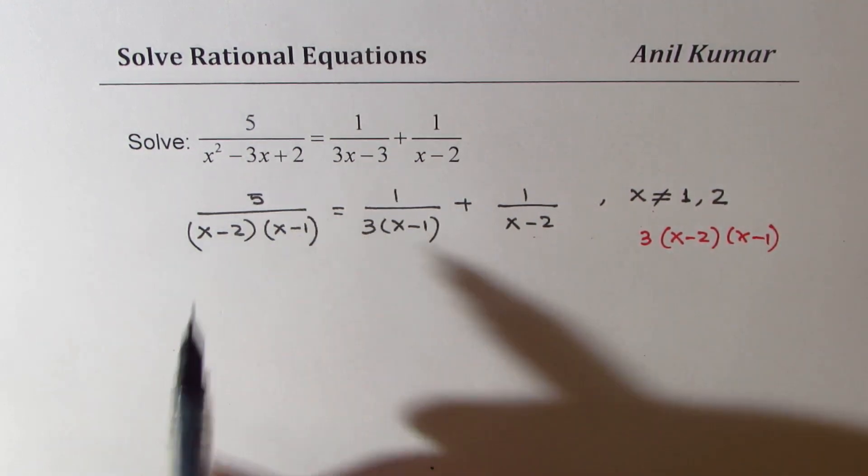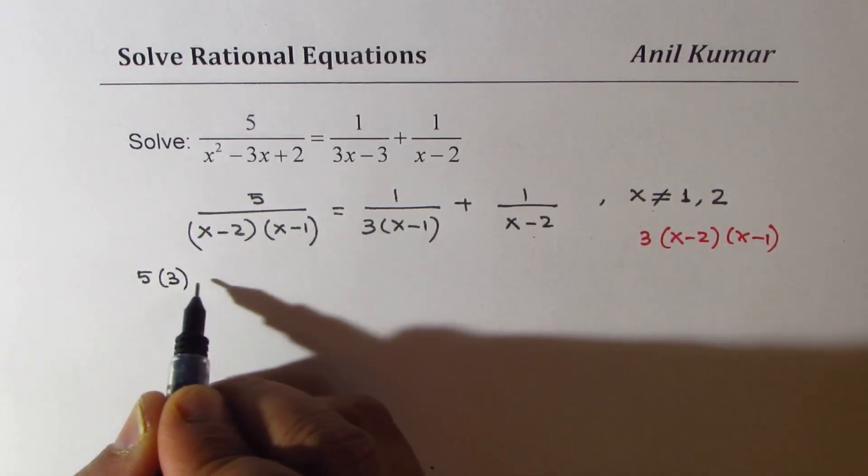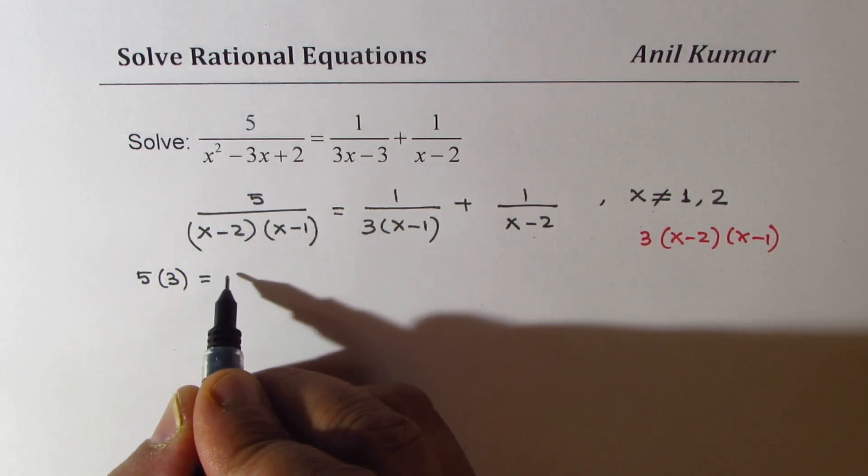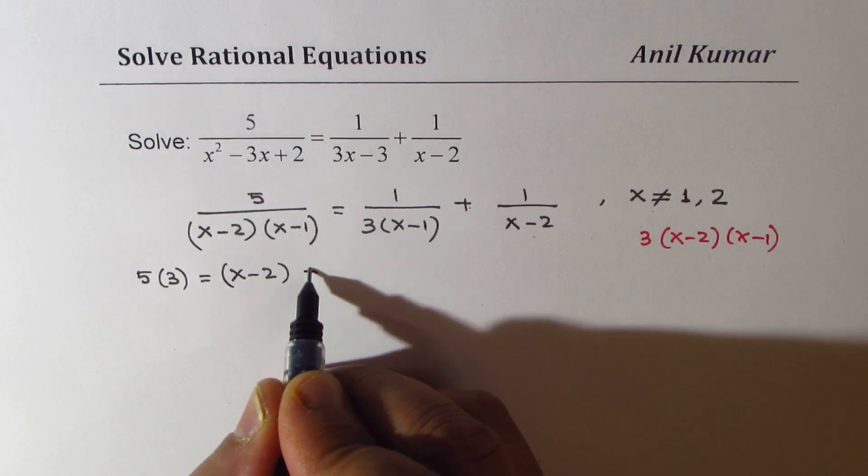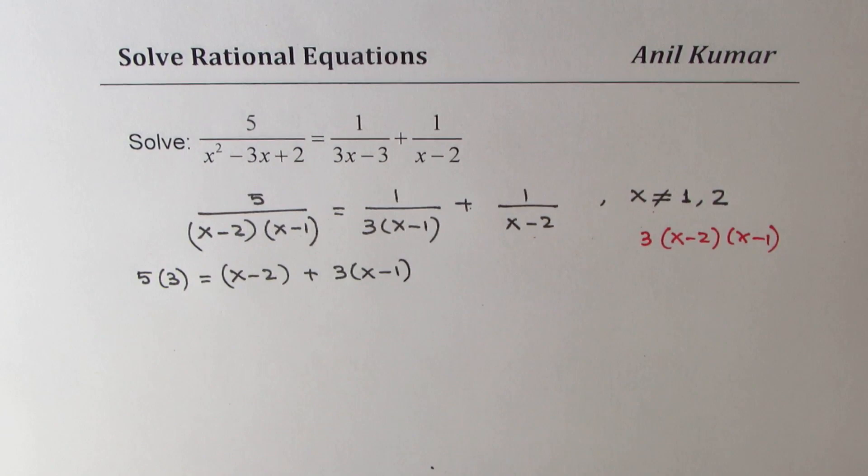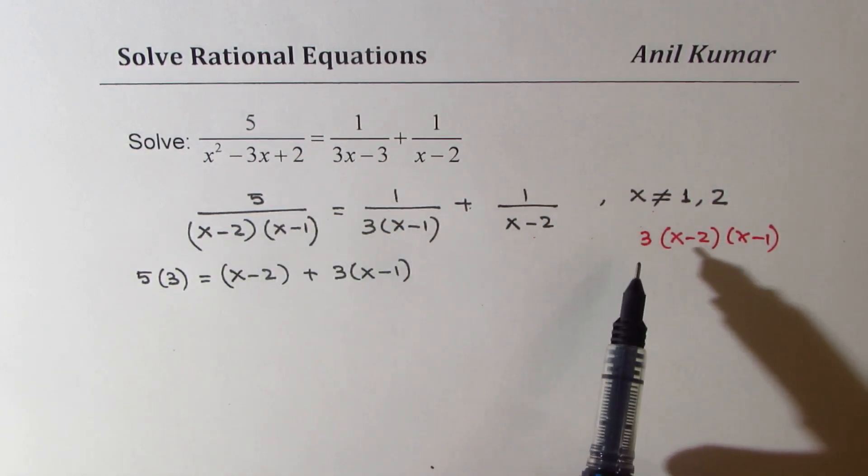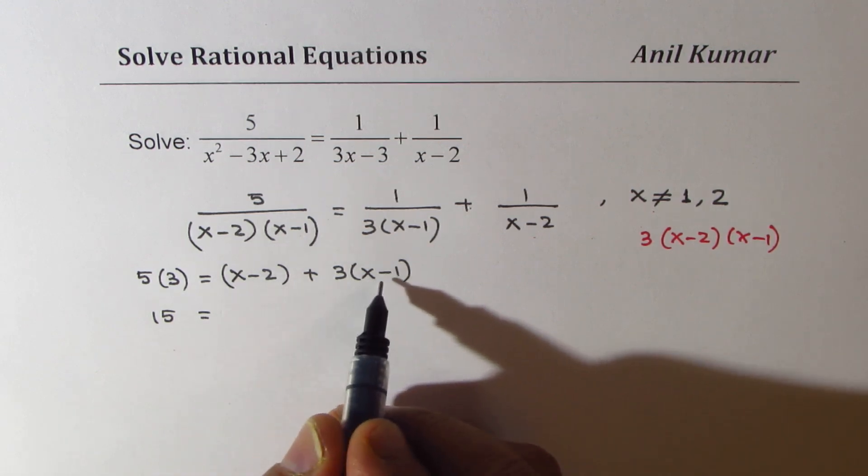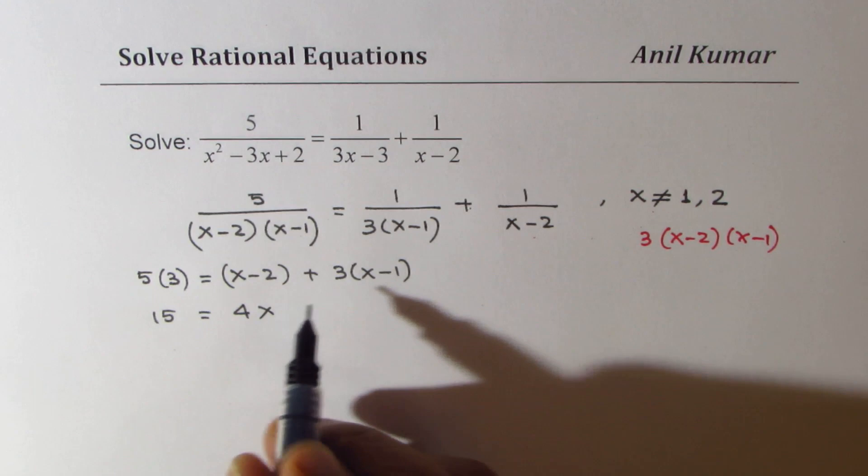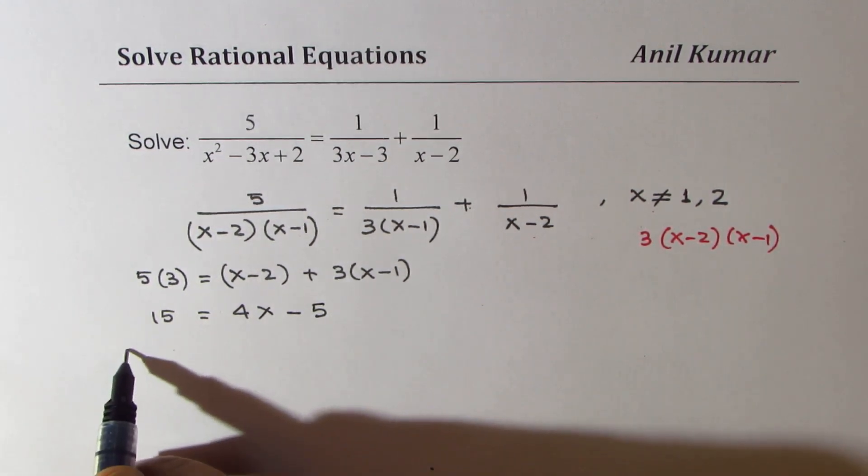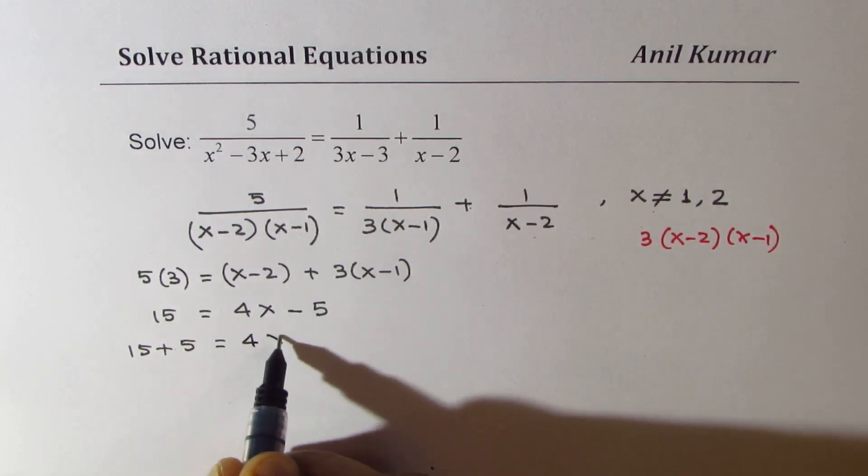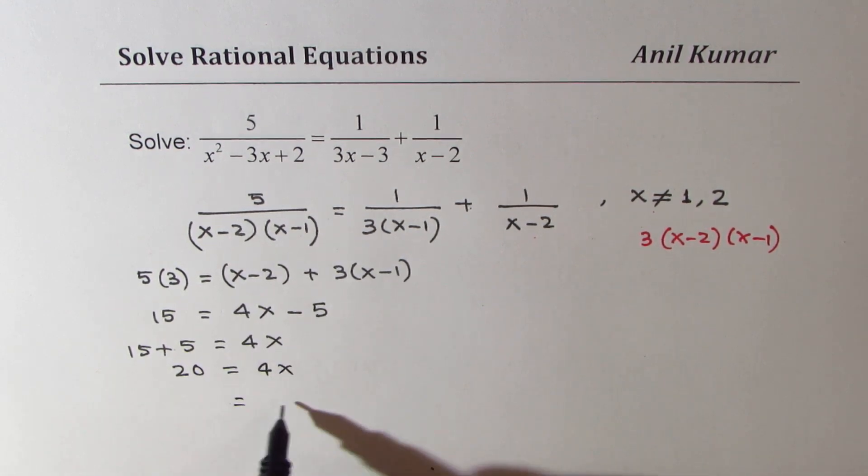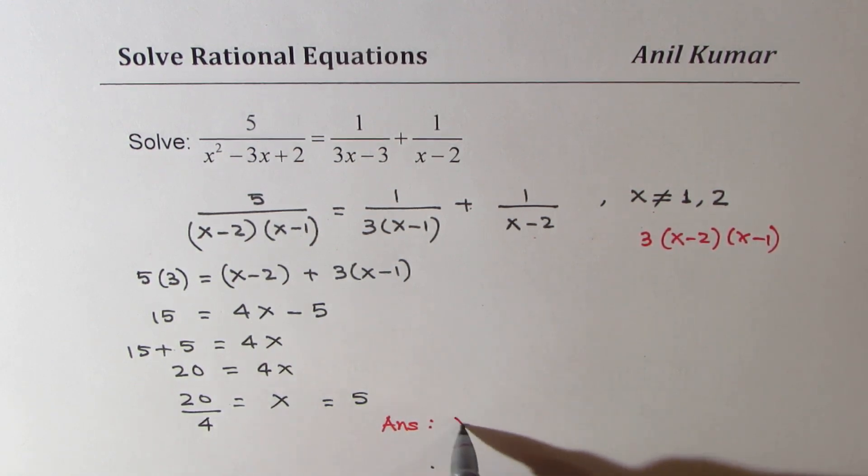So if you do that, what do you get? Here you get 3 times 5 equals to 1 time the factor which is missing is x minus 2, so we get x minus 2, and then here we get 3 times x minus 1. So the equation now becomes 15 equal to x plus 3x, which is 4x, minus 2 minus 3, which is minus 5. So bringing 5 to the left side, we get 15 plus 5 equals to 4x, or 20 equals to 4x, and dividing by 4, we get x equals to 5. Now, x equals to 5 is not a restriction, so we do have an answer here, which is x equals to 5.